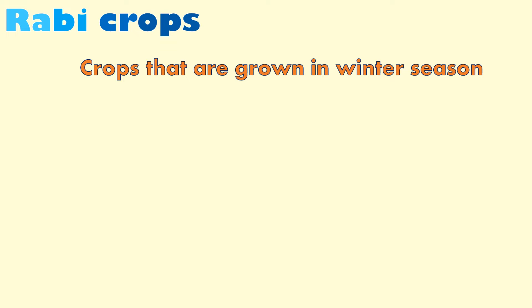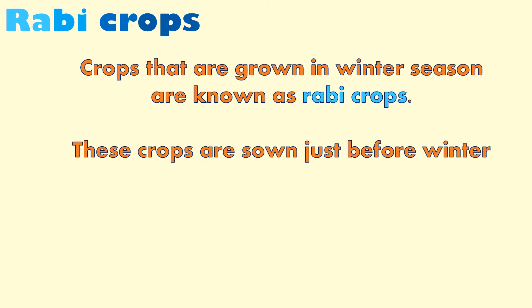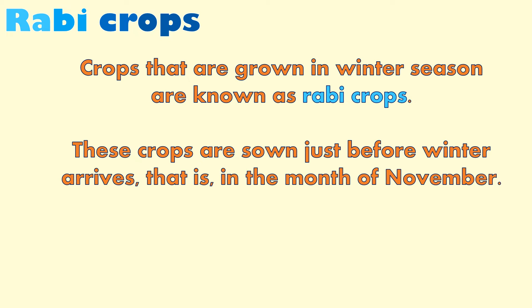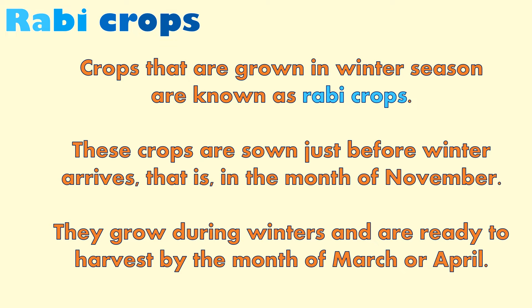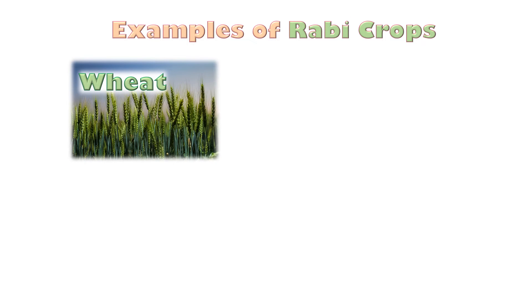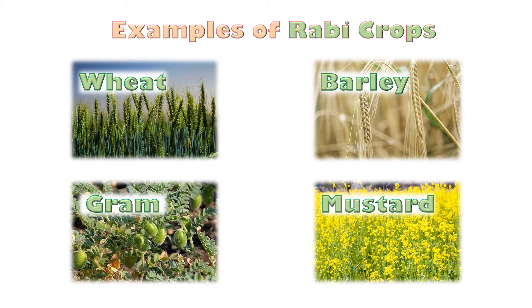Rabi crops. Crops that are grown in winter season are known as Rabi crops. These crops are sown just before winter arrives, that is in the month of November. They grow during winters and are ready to harvest by the month of March or April. Some examples of Rabi crops are wheat, barley, gram, and mustard.